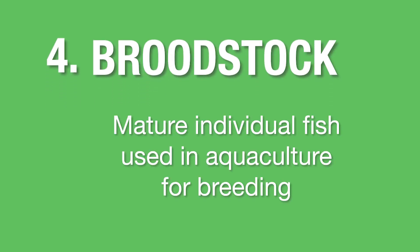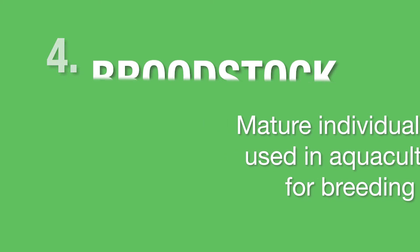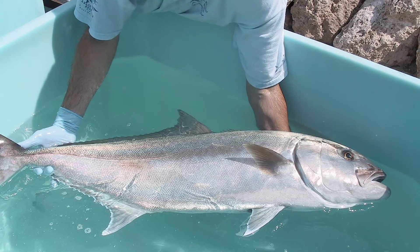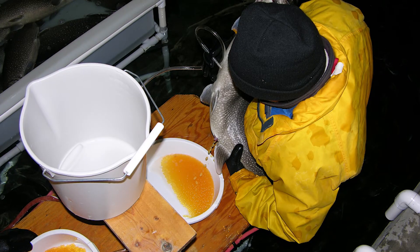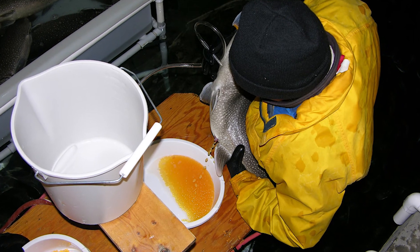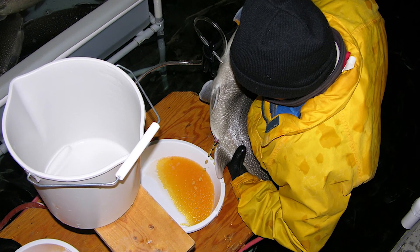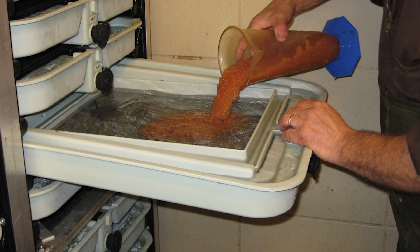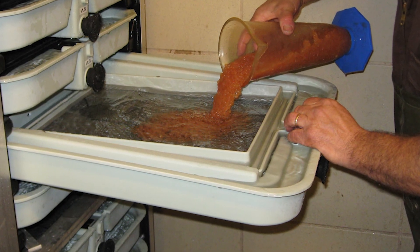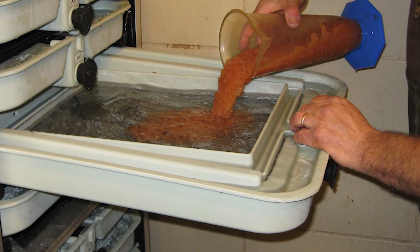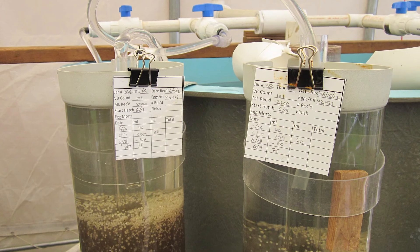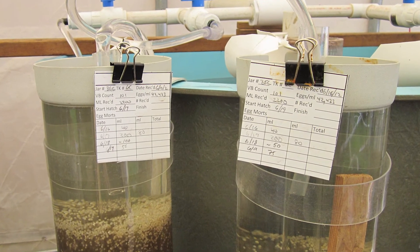Broodstock, or broodfish, is a mature individual fish used in aquaculture for breeding purposes. The fish that could be called broodstock should be ready for spawning and will undergo conditioning to prepare for maximum yield of fry output during the breeding process. By having their own broodstock in the hatchery, farmers can selectively plan and control all matings while producing high quality larvae.